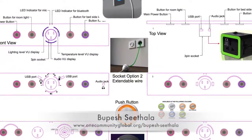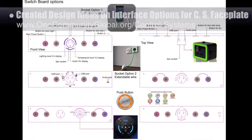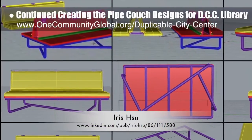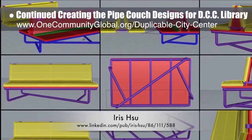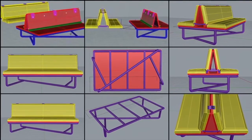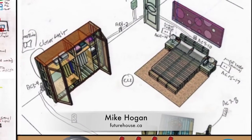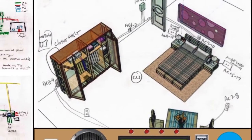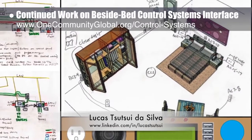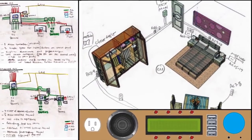Bupesh Sithala, interior designer, created design ideas for the faceplate of the visitor room bedside control systems interface. Iris Hsu, industrial designer, continued with additional pipe couch designs for the duplicable city center library — her 10th generation drawings focusing on more cushion details and a simplified support for the back. Behind the scenes, Mike Hogan, Automated Systems Developer and Business Systems Consultant, and Lucas Tsui Da Silva, 4th year computer engineering student, continued discussion about the appearance and best functional design for the bedside control systems interface, with images created by Mike showing two completely different wiring approaches.